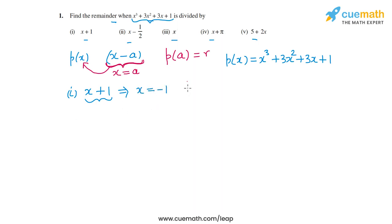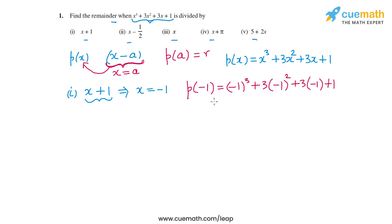Let us find p(-1). So p(-1) = (-1)³ + 3(-1)² + 3(-1) + 1, which equals -1 + 3 - 3 + 1 = 0. So when p(x) is divided by (x + 1), the remainder is 0, which actually means that (x + 1) is a factor of p(x).